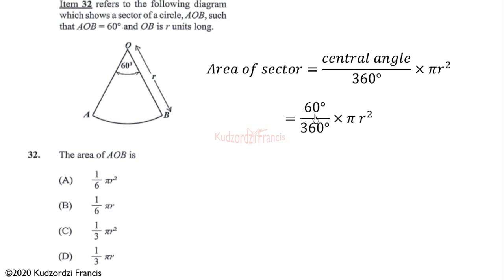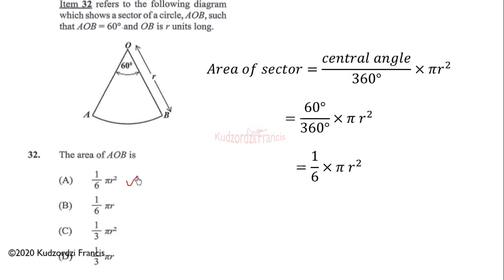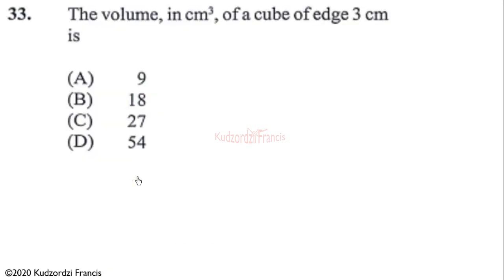We were given the central angle to be 60 degrees. So 60 divided by 360 gives us 1 over 6, times pi r squared. Therefore the correct answer is option A. Now let's look at number 33.